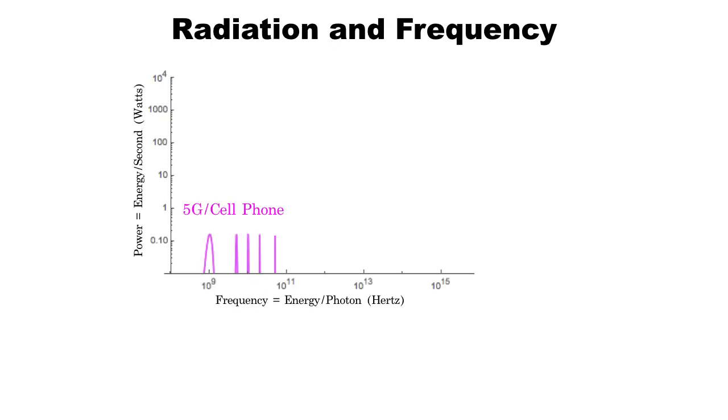Here we have a plot of power emitted versus frequency, or in other words, number of photons per second versus the energy of those photons. Your cell phone will look like one of these pink spikes. It's going to depend on the carrier and the cell phone you have. Different cell phones have different power capabilities, but typically they operate between one and three watts. You can check the specs on your battery. Your cell phone cannot emit more power than the battery can provide.